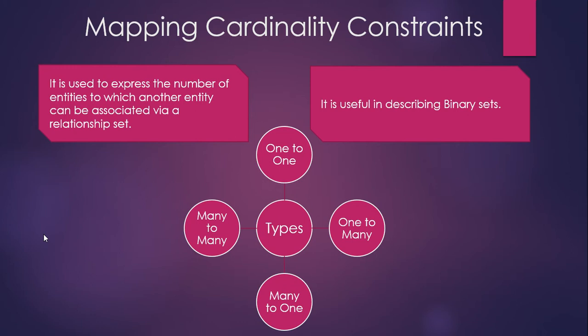In one-to-one, one entity is related to another entity in a one-to-one manner. For example, one student is related to one teacher, or one customer is related to one shop. In one-to-many, one teacher is related to many students. Similarly, many-to-one means many students are related to one teacher.